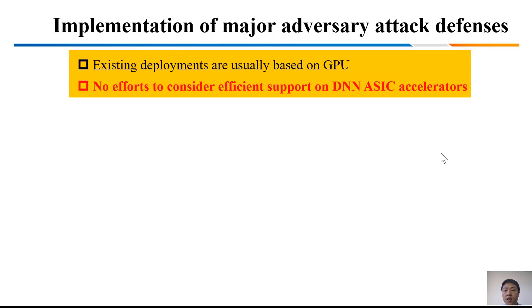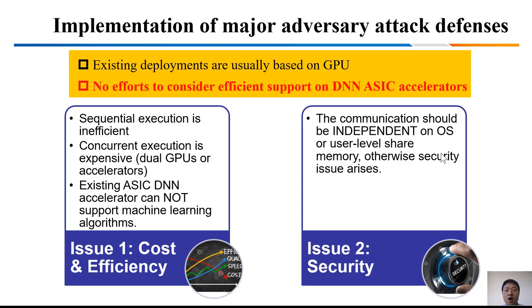In terms of implementation, there are some problems. Existing deployments are usually based on GPU, and according to our best knowledge, there is no work so far to consider efficient support on DNN ASIC accelerators. There are two big issues. First, cost and efficiency: sequential execution is inefficient, while concurrent execution on dual GPUs or accelerators is expensive. More importantly, existing ASIC DNN accelerators cannot support machine learning algorithms. Another issue is security: the communication between the target and detect modules should be independent of OS or user-level shared memory, as that kind of communication is dangerous once the OS is compromised. So we expect a tightly coupled design.